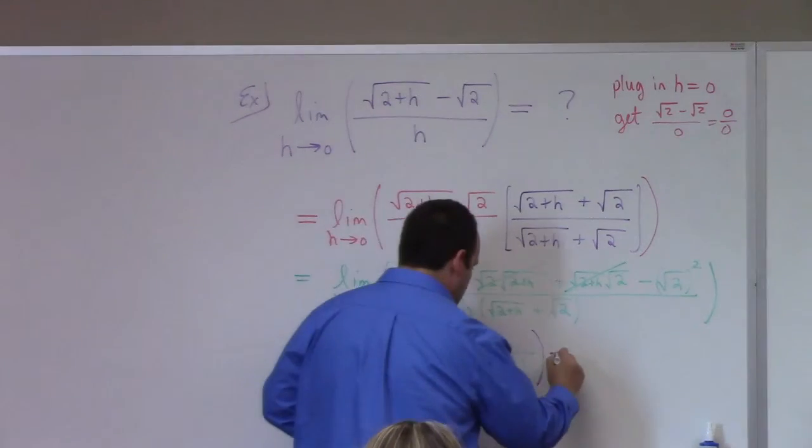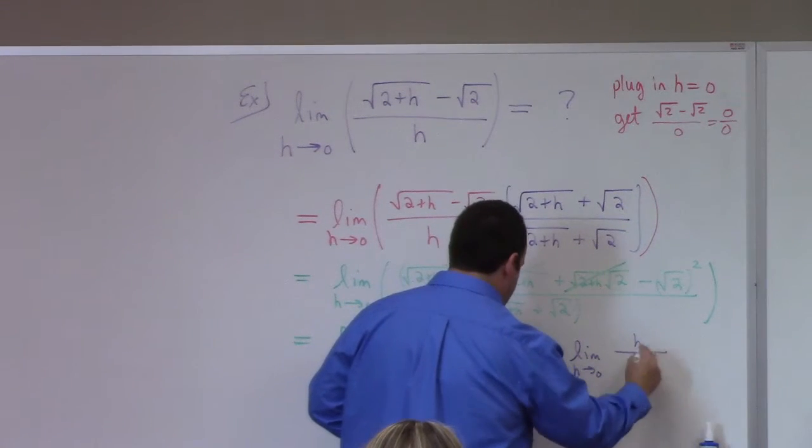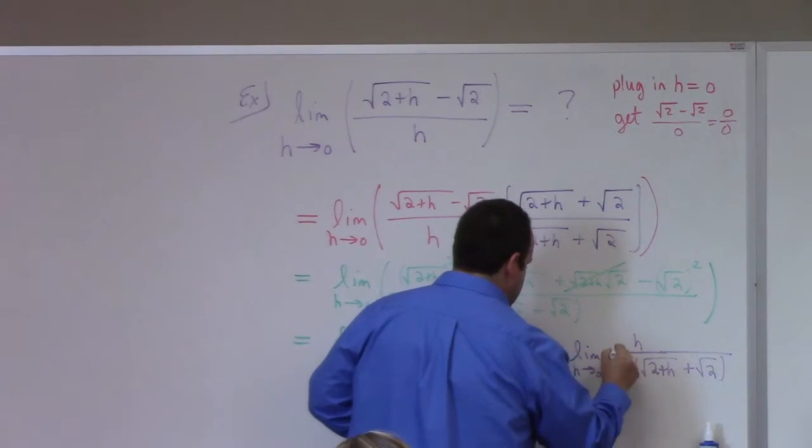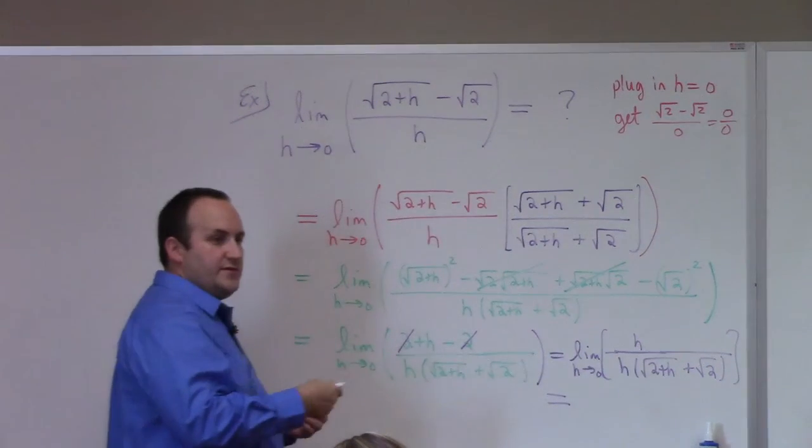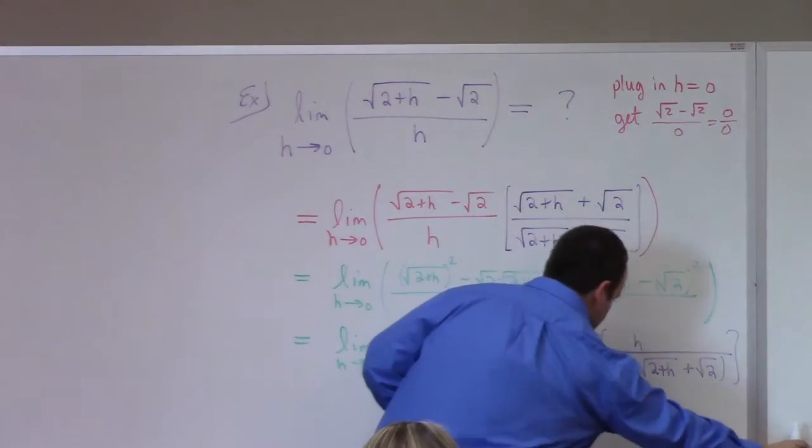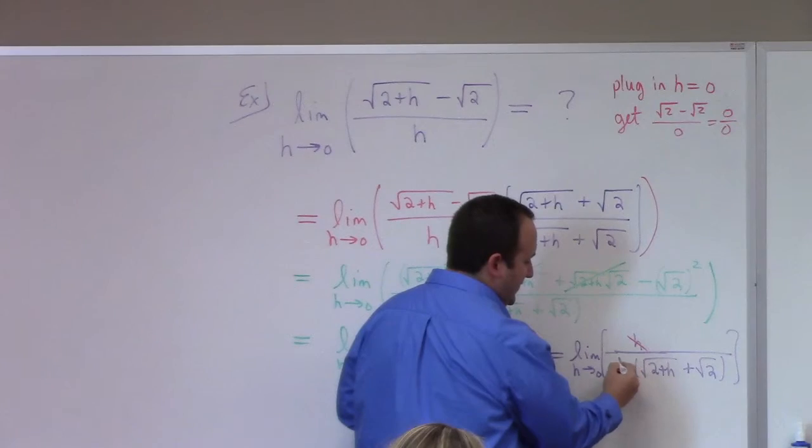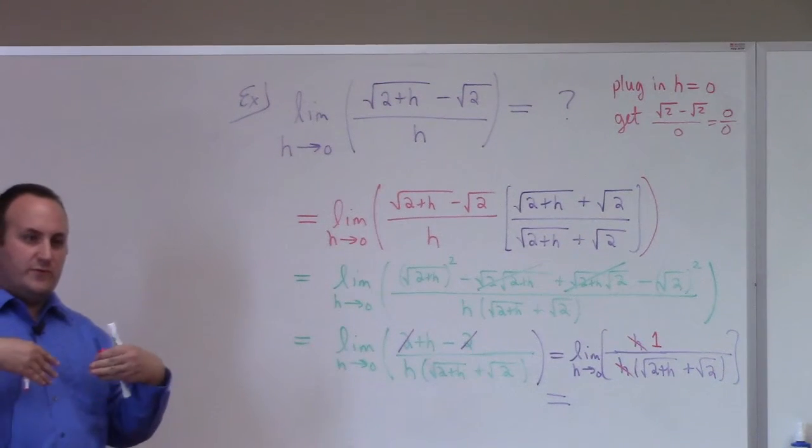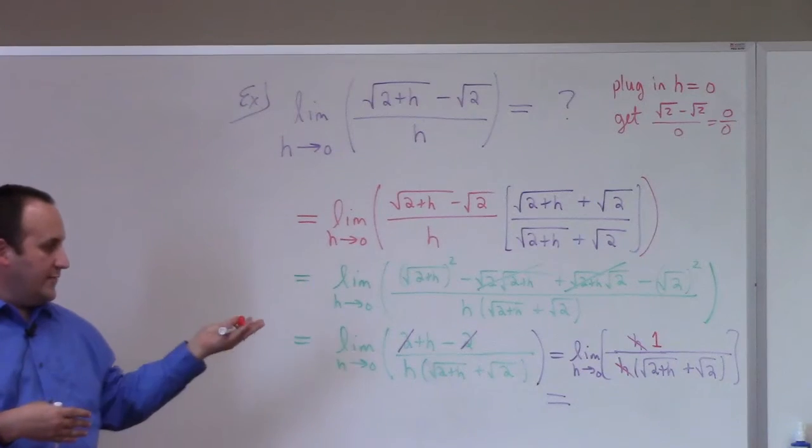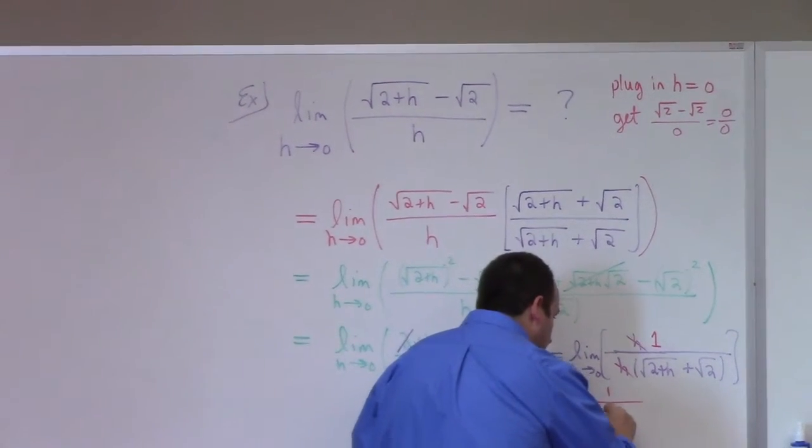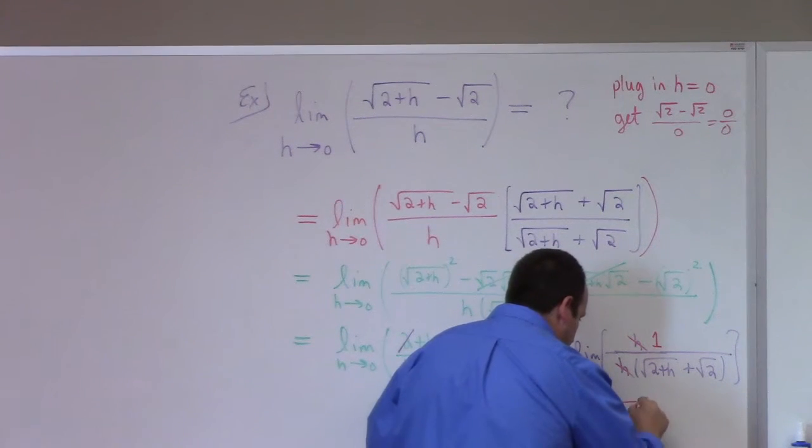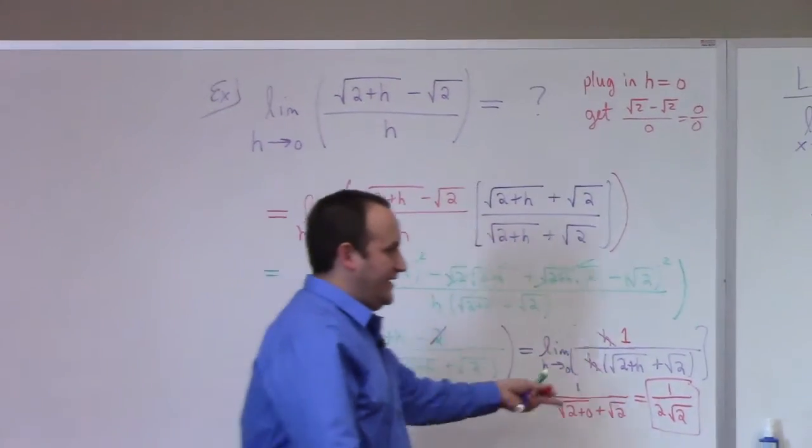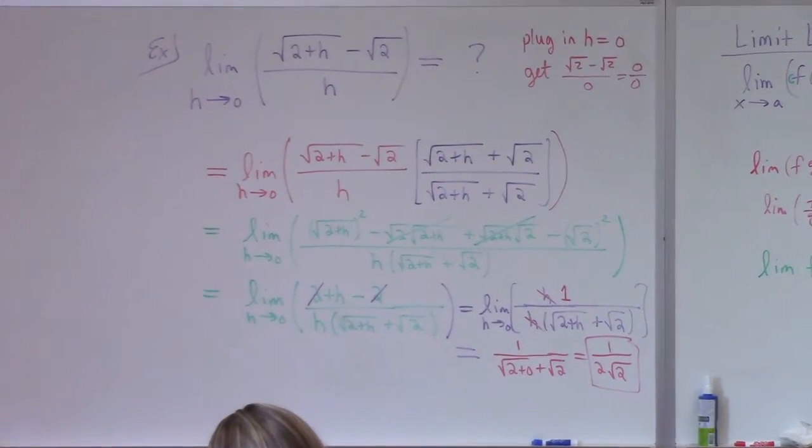And then at that point you're left with the limit as h goes to 0 of h divided by h times the square root of 2 plus h plus the square root of 2. And then you see the h's reduce. They cancel multiplicatively. That doesn't leave me a 0 upstairs, it leaves me a 1. At this point we have now done enough algebra that we removed the indeterminacy. And now we can just plug in h equals 0. What do we get? 1 over square root of 2 plus 0 plus the square root of 2. There you have it. 1 over 2 square root of 2 is the answer.